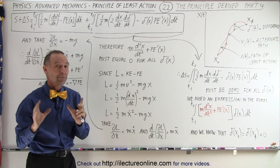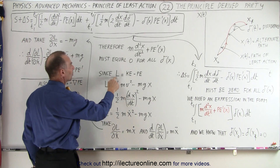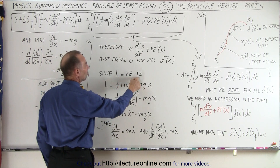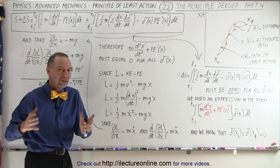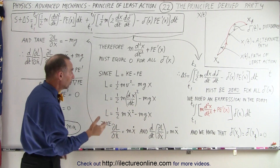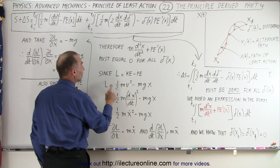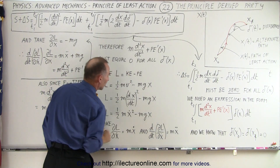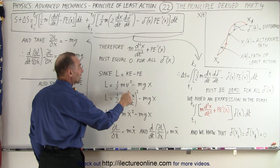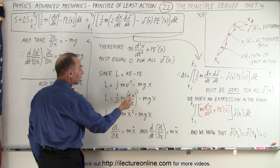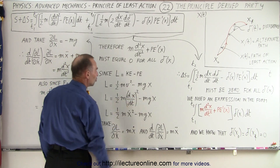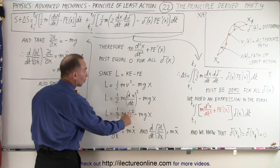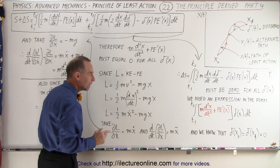Now let's compare that to our Lagrangian. Our Lagrangian was defined as the difference between the kinetic and the potential energy. For a one-dimensional situation, the Lagrangian is equal to one-half mv squared minus mgx. Since v can be written as dx/dt, we have one-half m(dx/dt)² minus mgx — or, using dot notation, one-half m(x-dot)² minus mgx.